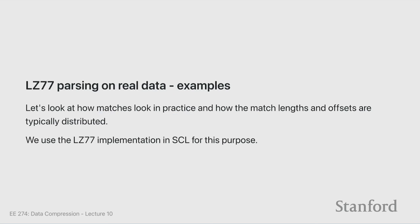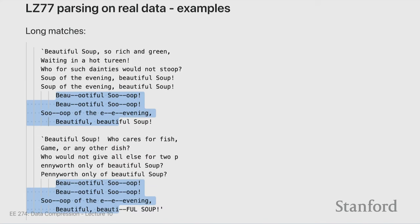This is Alice in Wonderland, one of the standard compression corpus texts. Here you can see a very long match: 'Beautiful soup, beautiful soup, soup of the evening' — the selected text exactly matches between two paragraphs. LZ77 would describe all of this in just two numbers: the offset and the length. After parsing, the text becomes so much smaller.